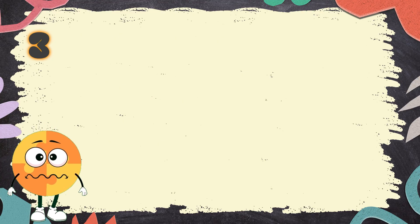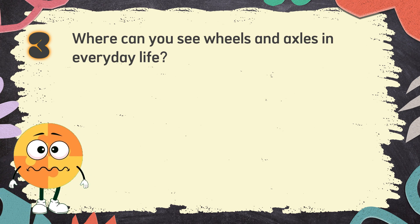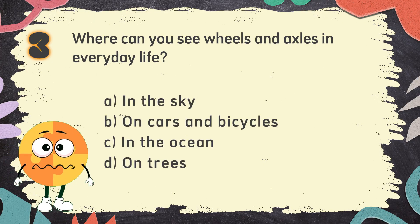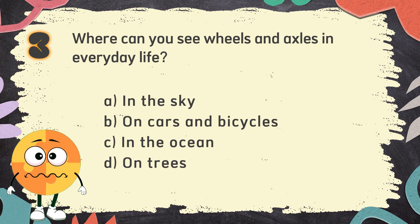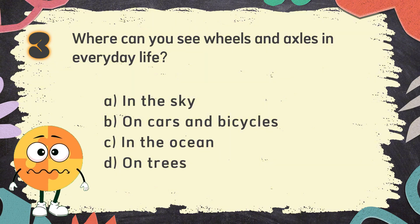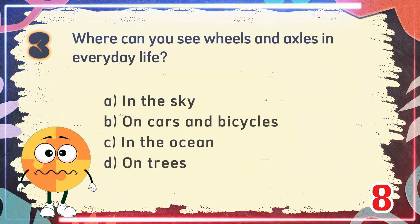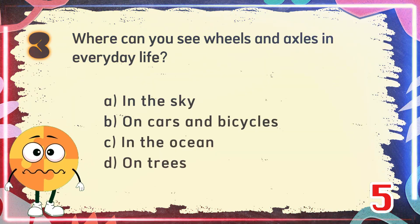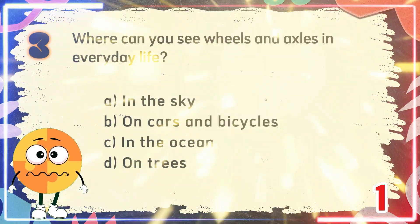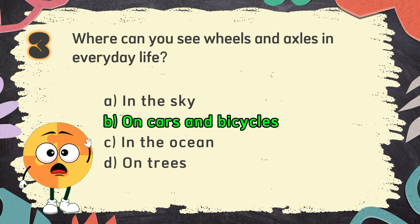Number 3. Where can you see wheels and axles in everyday life? The choices are: A. In the sky. B. On cars and bicycles. C. In the ocean. D. On trees. The correct answer is B. On cars and bicycles.